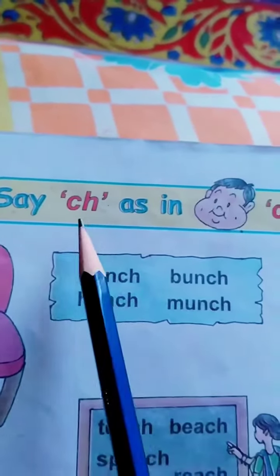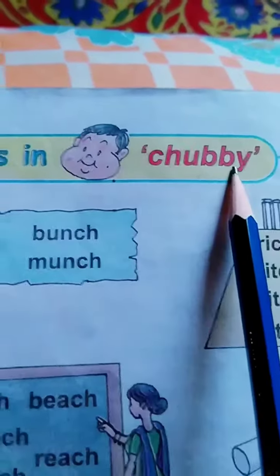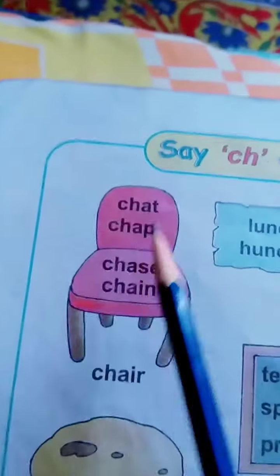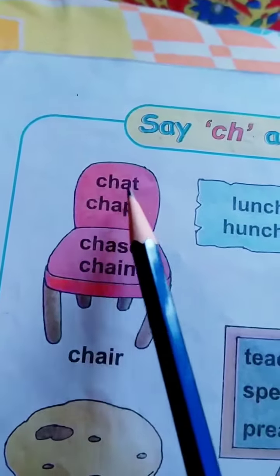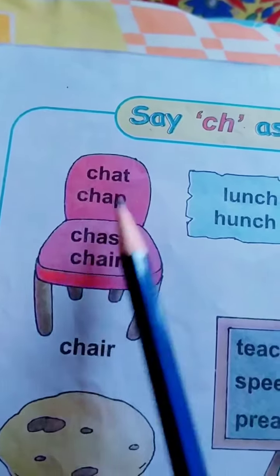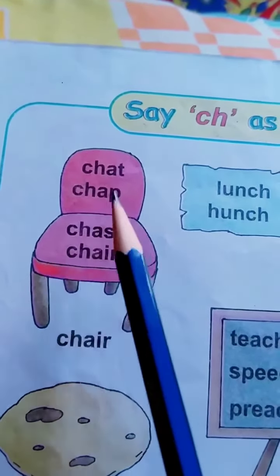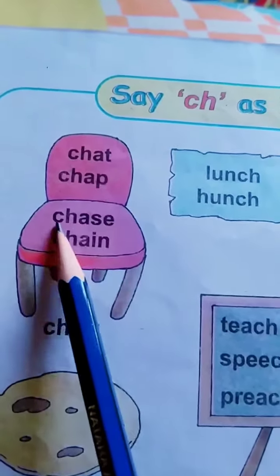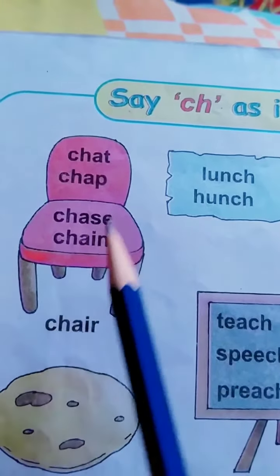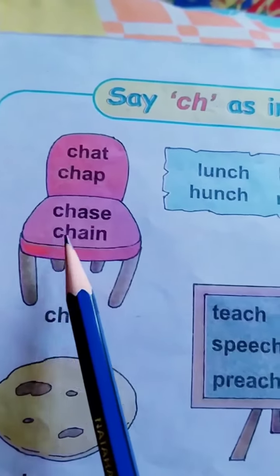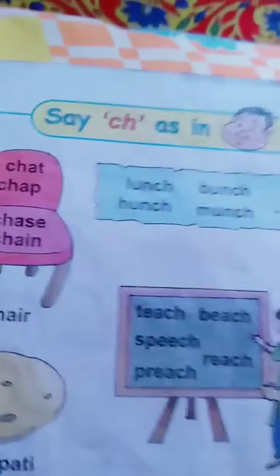Say ch as in chubby. Our first word is C H A P — chap. C H A S E — chase. C H A I N — chain.